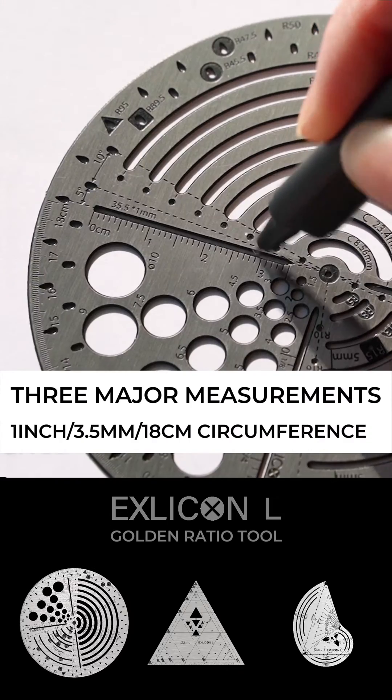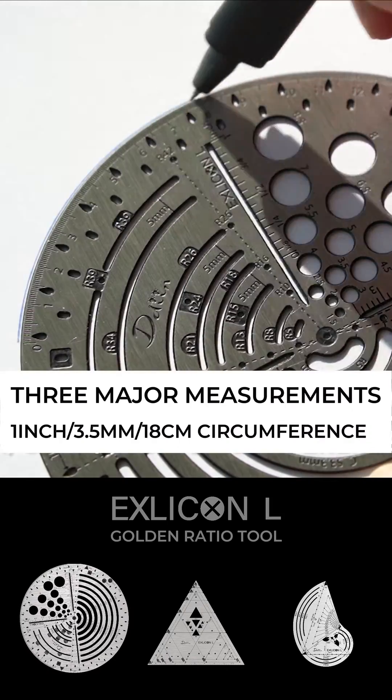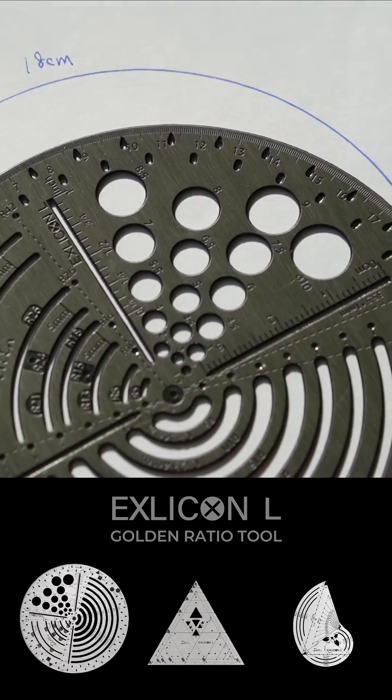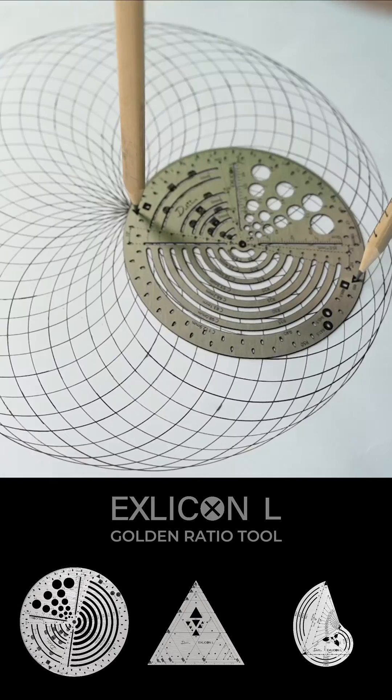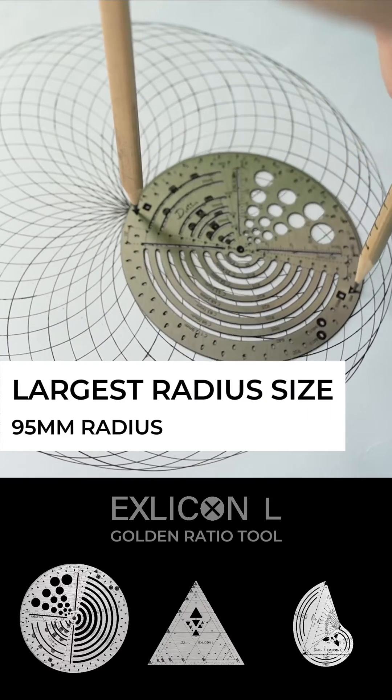Besides, it has three major measurements allowing you to measure in inches, centimeters, or circumference. Surrounding the periphery are shapes of radius markings with 10-degree compartments, great for beginners to draw grids or mandalas.